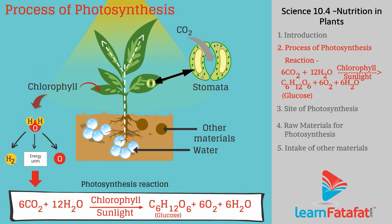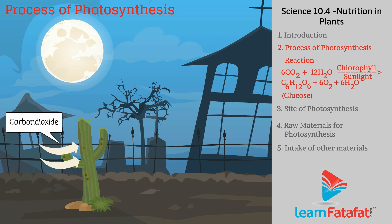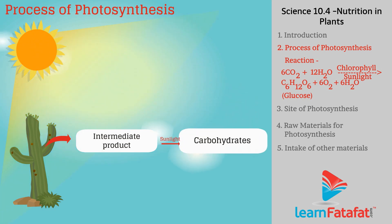It is not necessary that all these steps take place at the same time. For example, in desert plants, carbon dioxide is absorbed during the night and an intermediate product is prepared. During the day, when sunlight is available, this product is converted to carbohydrates.